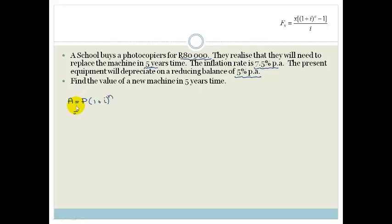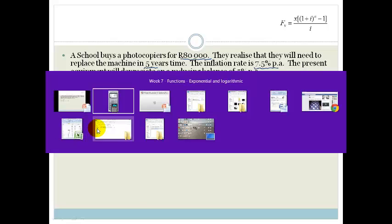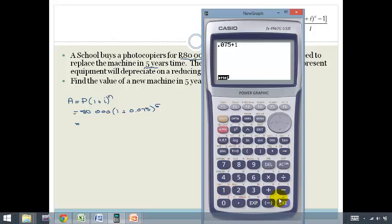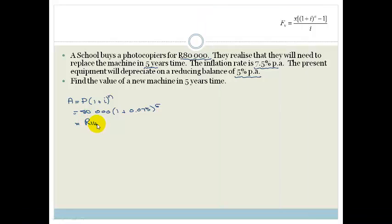Therefore we can say the principal is the amount of money we currently paid for it, which was 80,000 Rand, times 1 plus the interest rate, which is 0.075, to the power of 5. So, we can pop that in our calculator: 0.075 plus 1 all to the power of 5 times by 80 equals 114,850.35 cents.